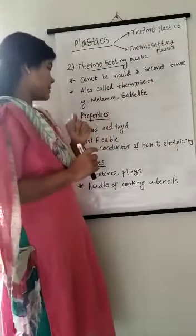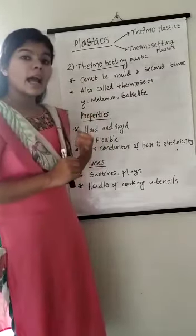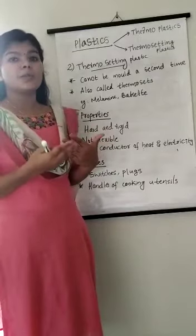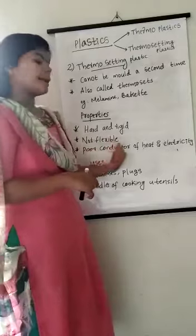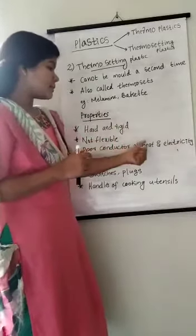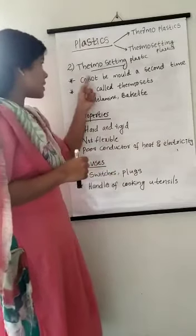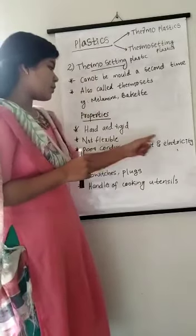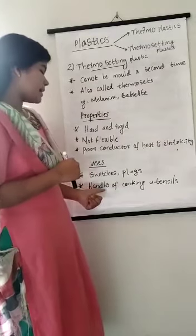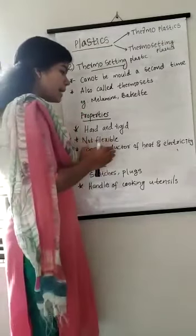Other properties of thermosetting plastics are: they are hard and rigid, they are not flexible, and when we try to bend them they will break. Another property is that they are poor conductors of heat and electricity — they do not conduct heat and electricity. This property is utilized for making switches and plugs. These thermosetting plastics are also used for making the handles of cooking utensils like pressure cookers and frying pans, because they are bad conductors of heat.